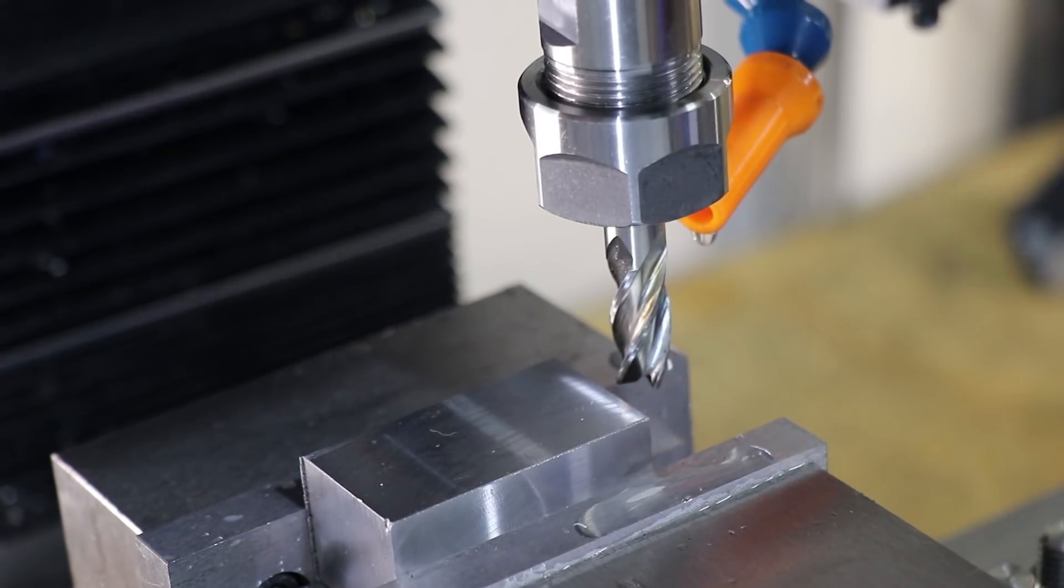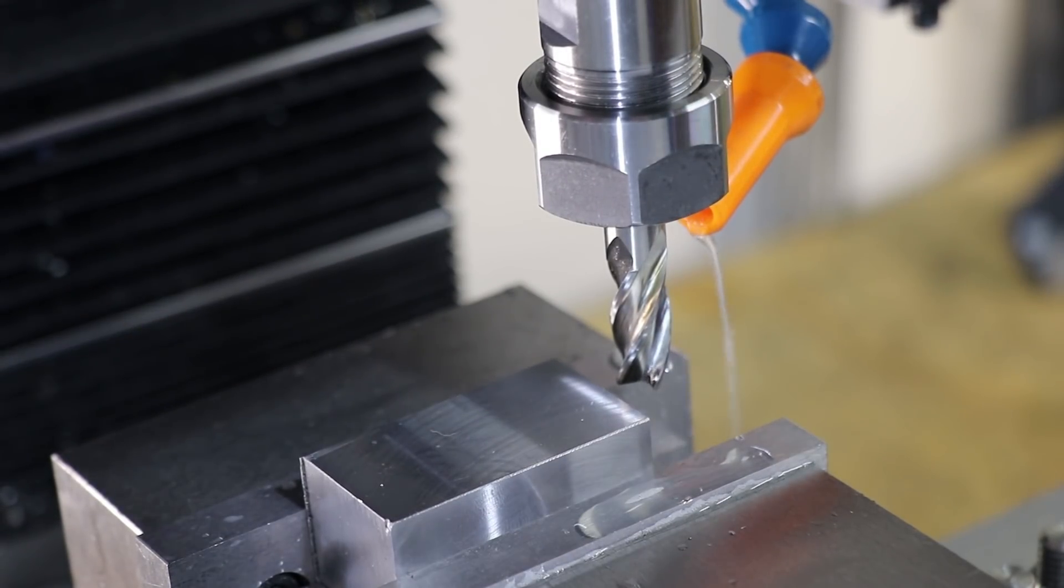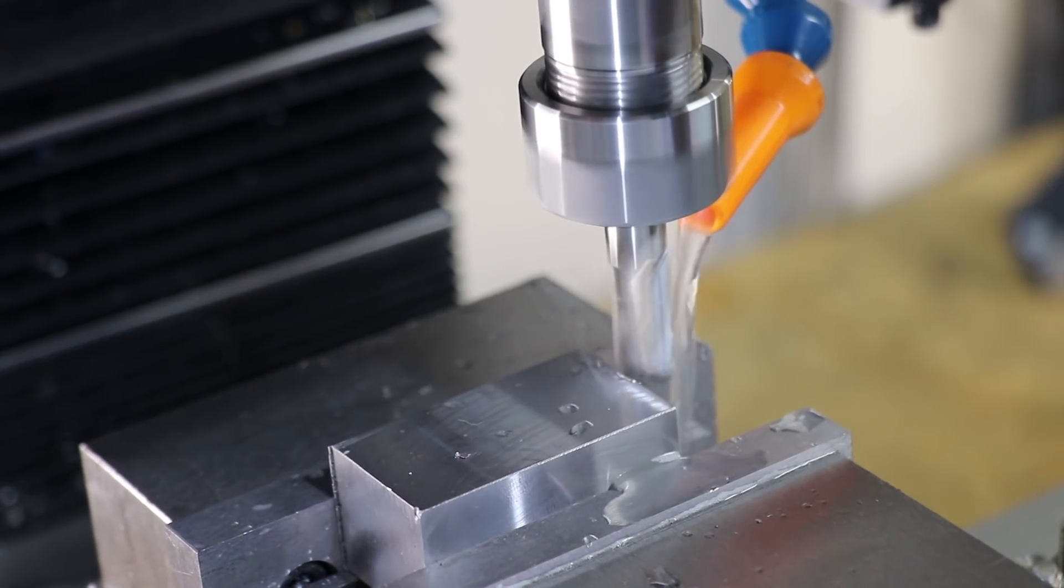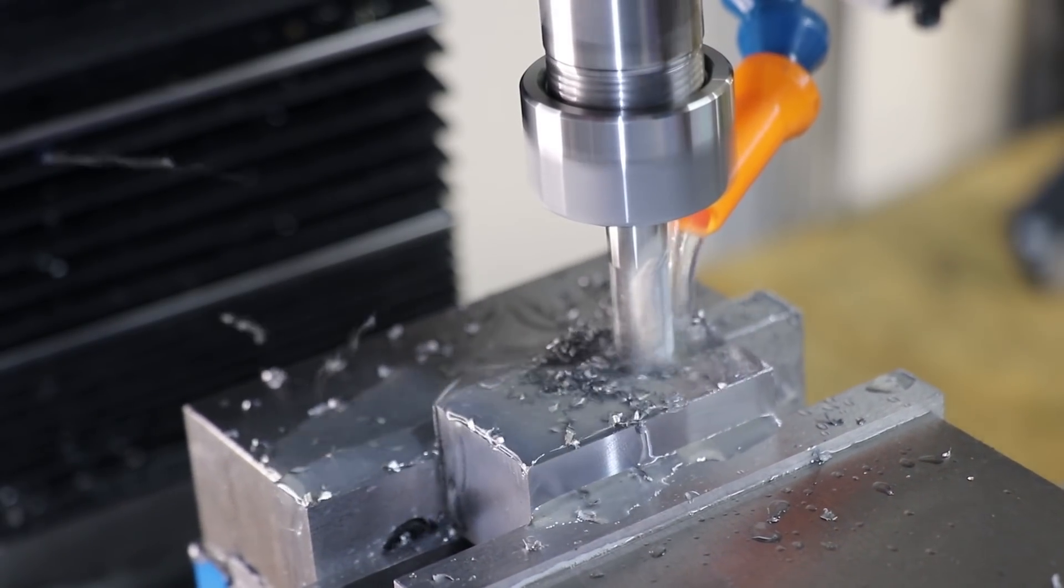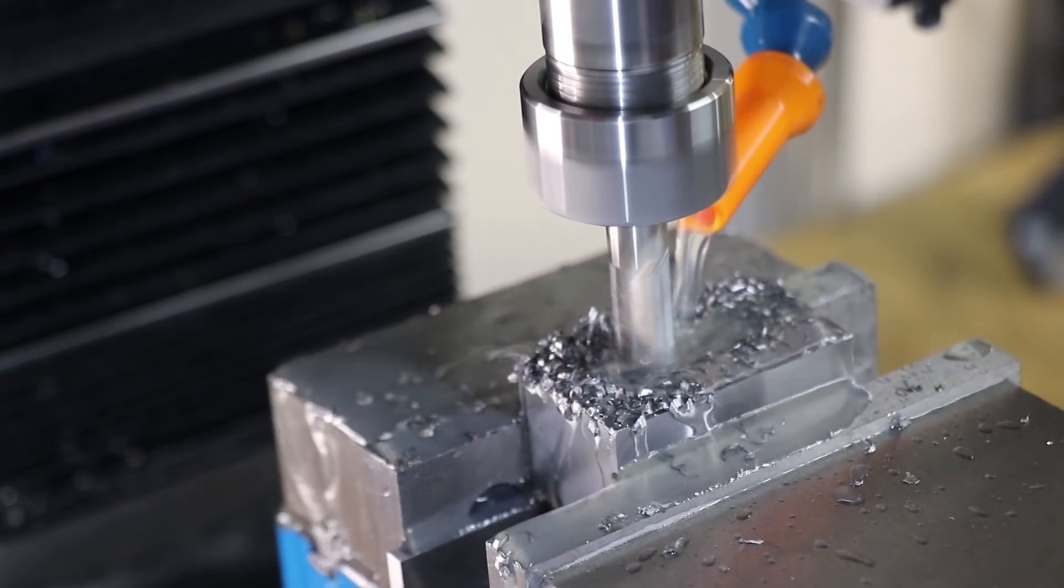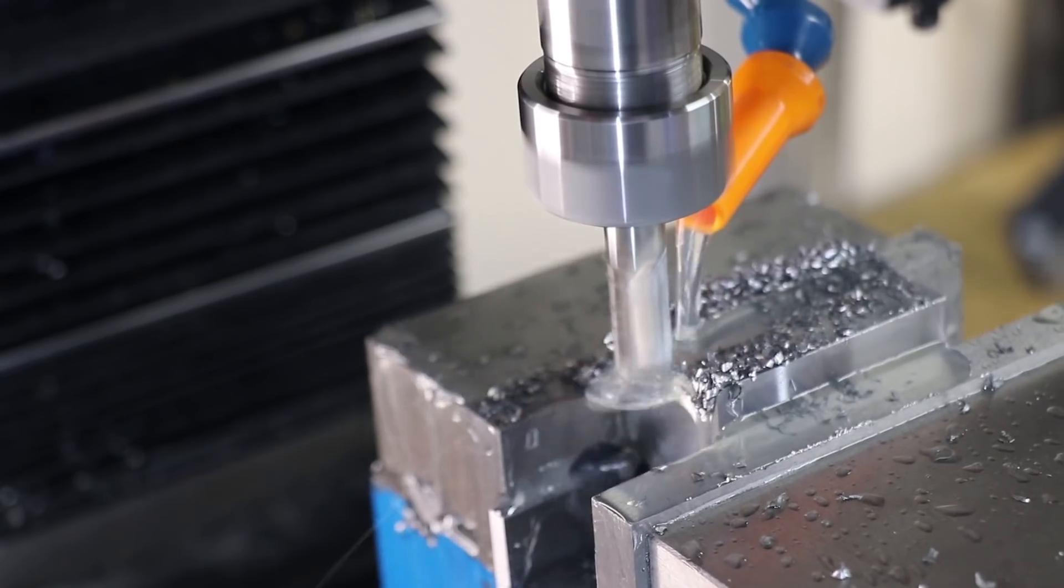The next tool holder that I'll make will be to hold the parting blade. I'll machine in a slot that's just big enough for the parting blade. And for this job I'm going to use a finishing end mill rather than using a rougher.